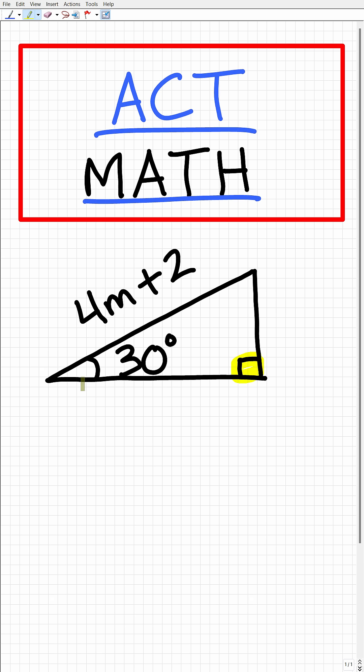Well, we have a right triangle here, but this is not just any right triangle. It is a special right triangle. So we have a 30 degree angle right here, so that makes this angle right here 60 degrees. So we have a 30, 60, 90 special right triangle.